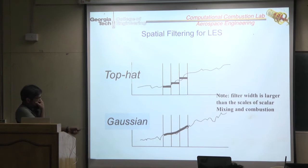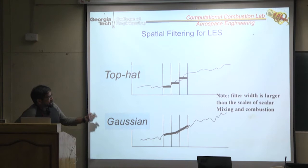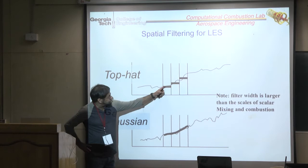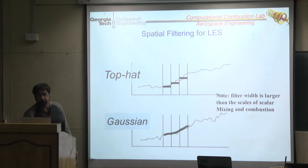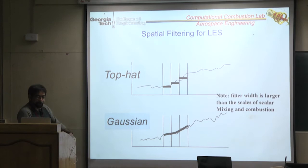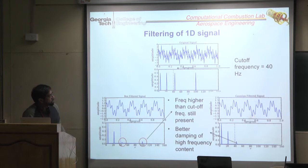A top-hat filter just averages the signal over the grid. The signal may be much finer than the grid, so you're wiping out everything below that by averaging. A Gaussian filter is a slightly better approximation, but a Gaussian filter in a physical space code must be explicitly performed, so it's very expensive and people usually don't do that.